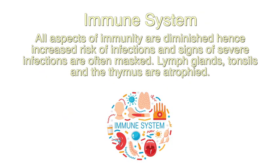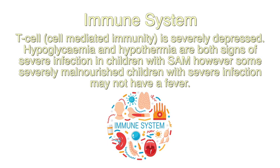Regarding the immune system: all aspects of immunity are diminished, hence there is an increased risk of infections, and signs of severe infection are often masked. Lymph glands, tonsils, and the thymus are atrophied, and T cell immunity is severely depressed. Hypoglycemia and hypothermia are both signs of severe infection in children with severe acute malnutrition; however, some severely malnourished children with severe infection may not have a fever.